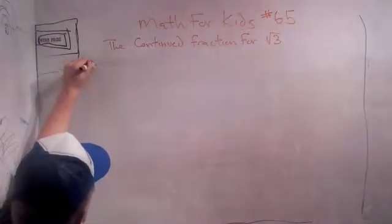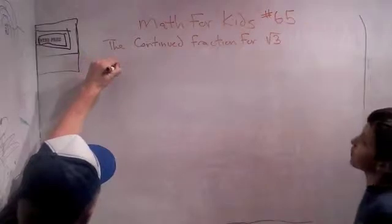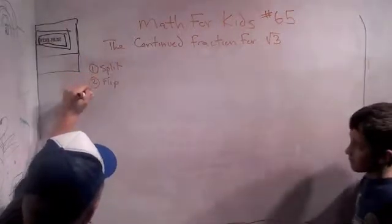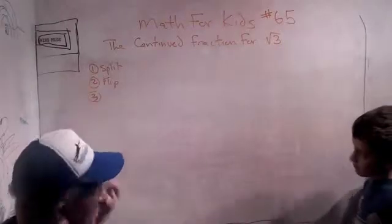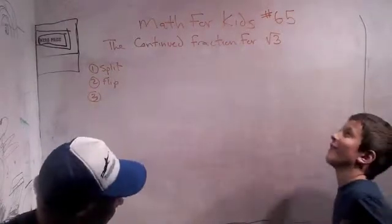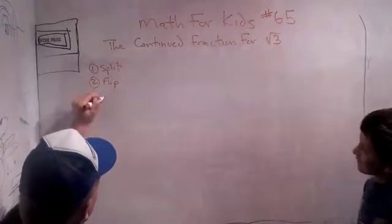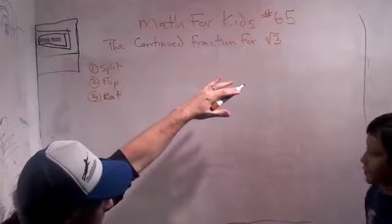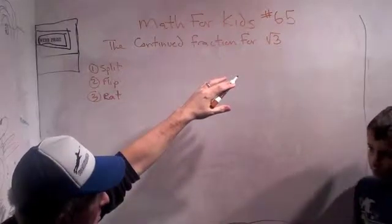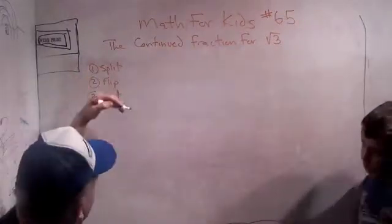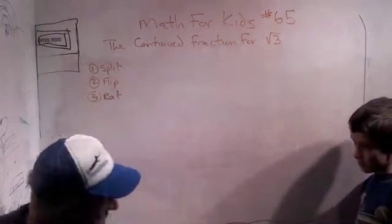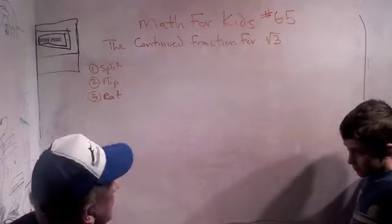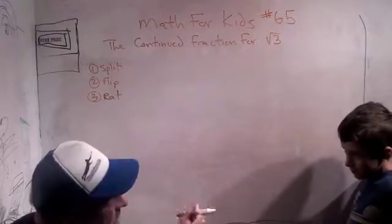No, I keep forgetting. Split, flip, and rat. So first we split into some integer that we know, so we have to investigate what the square root of 3 equals. Then we flip, and then we rationalize. And yesterday that was pretty easy, right? Today it's going to be a teeny tiny little bit harder.